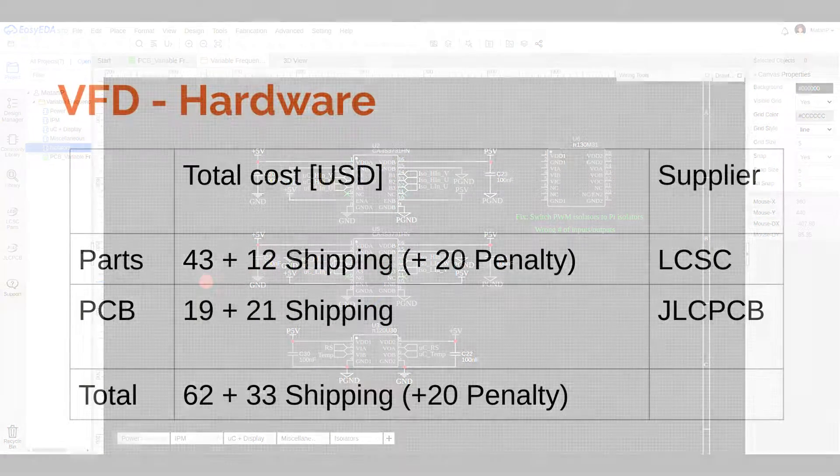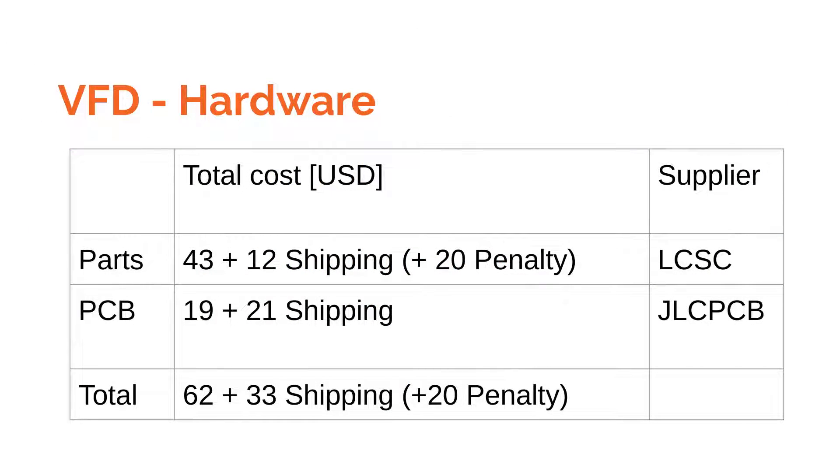I ordered most of the parts from LCSC, and in total they cost me $55, including shipping. With a $20 penalty cost, because I ordered the wrong isolators, so I had to order them again. I ordered the PCB from JLCPCB, and it cost $40, including shipping. This project was not panning out to be a less expensive option than a commercial VFD. Although, many more improvements and cost reductions can be made.